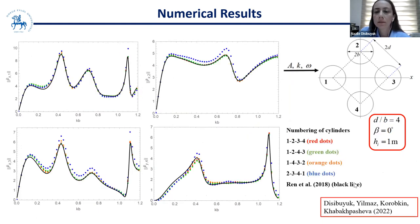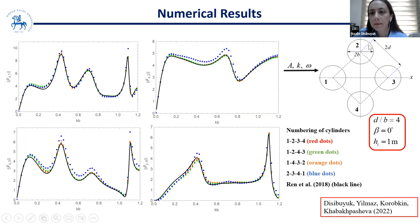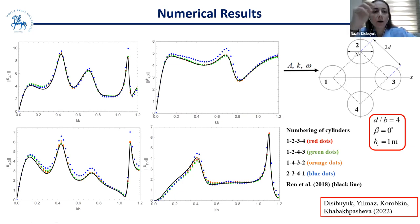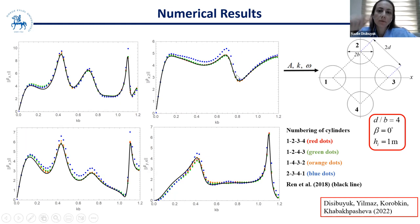We also investigated the effect of the numbering of cylinders in the iterative method. Waves are coming from left to right with incident wave angle beta equal to zero; the closest cylinder to the wave should be numbered first. If we start the iteration from the second cylinder instead (blue dots), the results differ from the other solutions in some cases. When we start from the closest cylinder, all results agree well with Ren et al. Starting from a further cylinder leads to some differences.